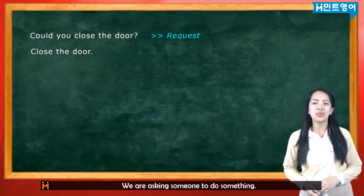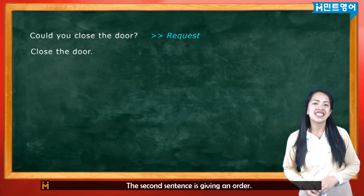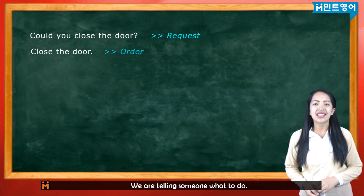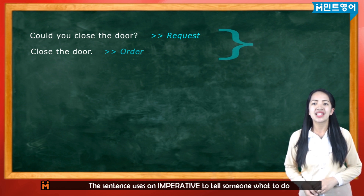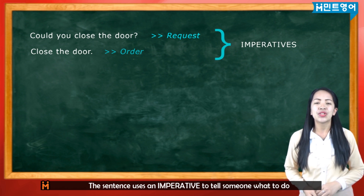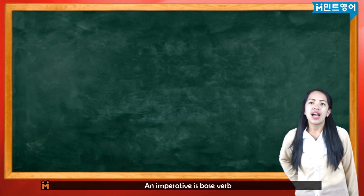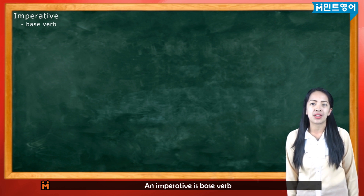We are asking someone to do something. The second sentence is giving an order — we are telling someone what to do. That sentence uses an imperative to tell someone what to do. An imperative is a base verb.